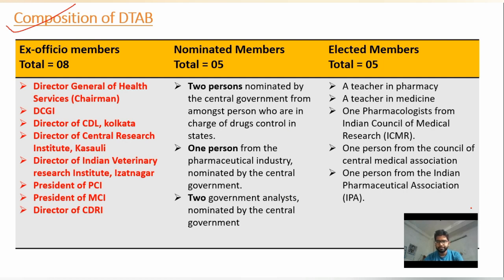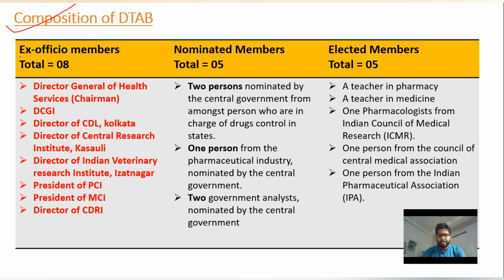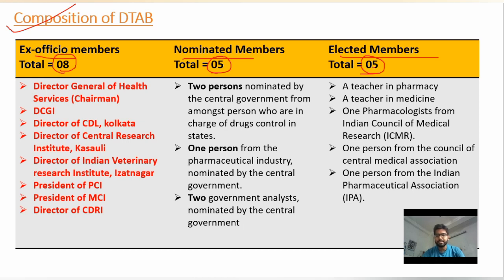In DTAB, there are three kinds of members: ex-officio members, nominated members, and elected members. There are a total of eight ex-officio members, five nominated members, and five elected members, making a grand total of 18.